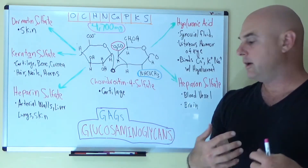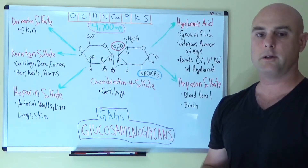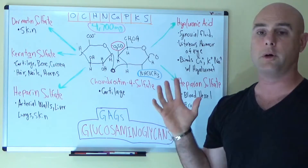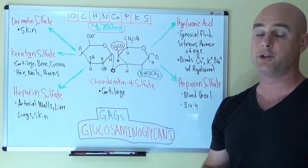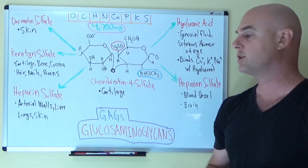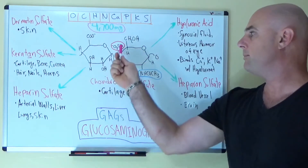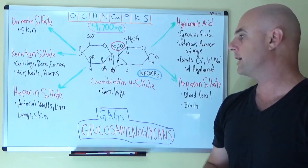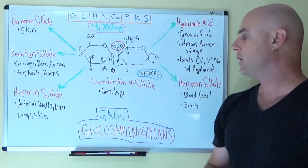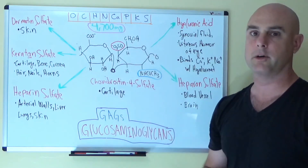So again, glycosaminoglycans — take a look at them online. These are all sugars found all throughout our body, and they're the sugars that hold us together. We are being held together by sugar. So if you're diabetic, take a look at how much sulfur you're getting, because sulfur is critical in most of these polysaccharides.